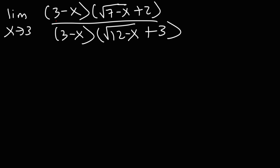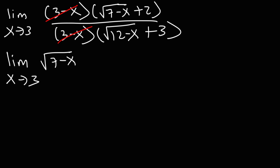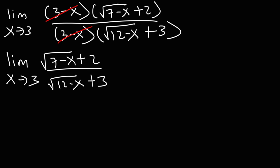So we can cancel those two factors of 3 minus x from the numerator and denominator. At this point, we can use direct substitution to get our final answer.